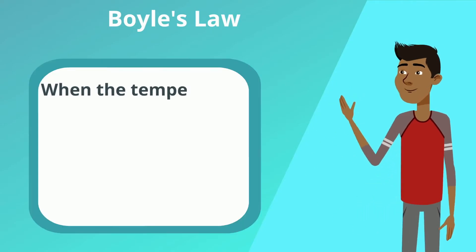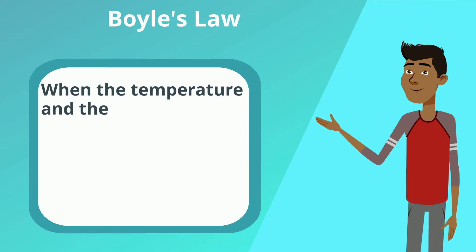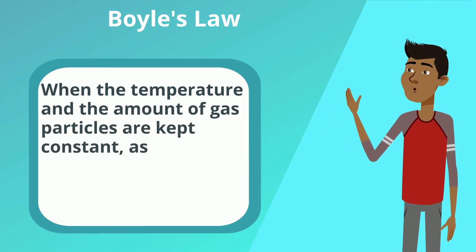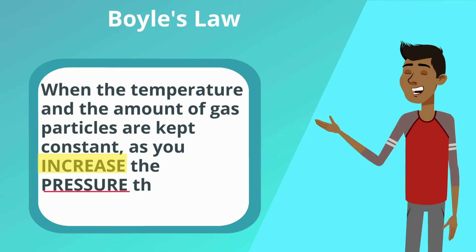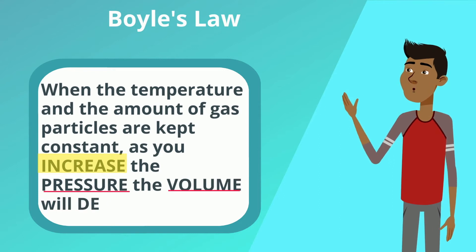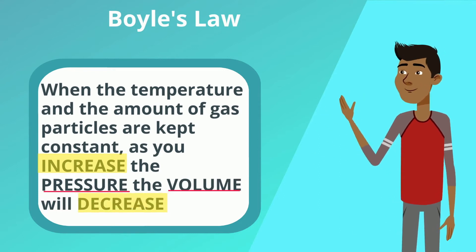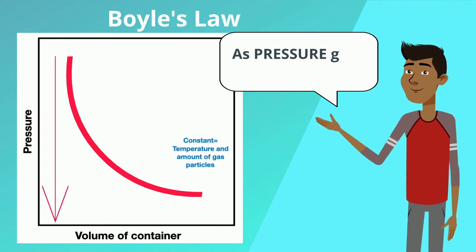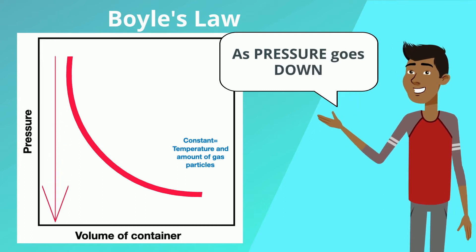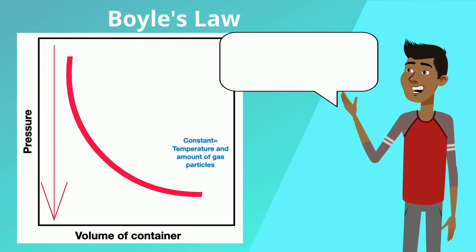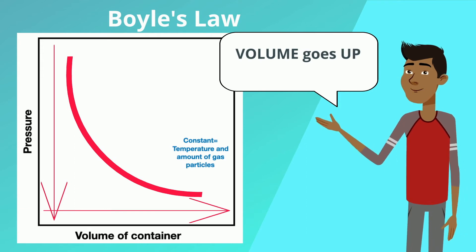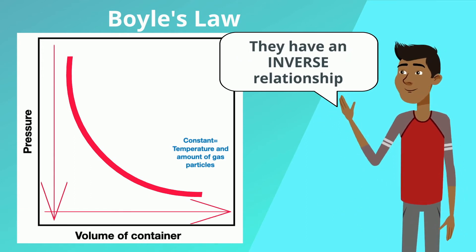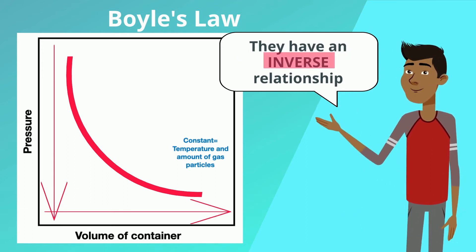Boyle's Law. When the temperature and the amount of gas particles are kept constant, as you increase the pressure, the volume will decrease. As the pressure goes down, the volume actually goes up. They have an inverse relationship.